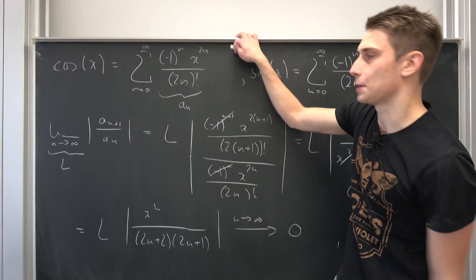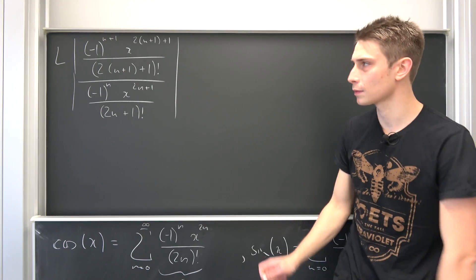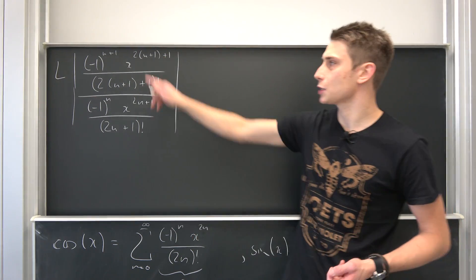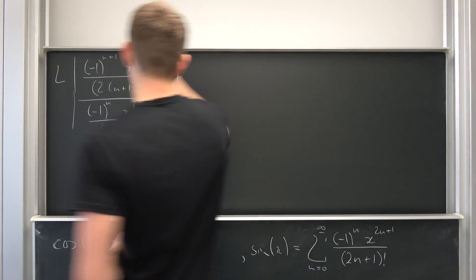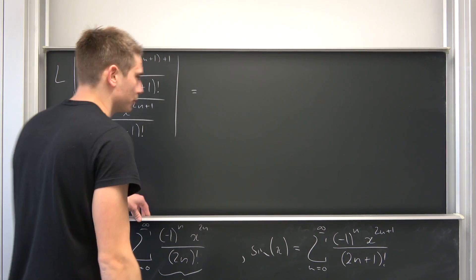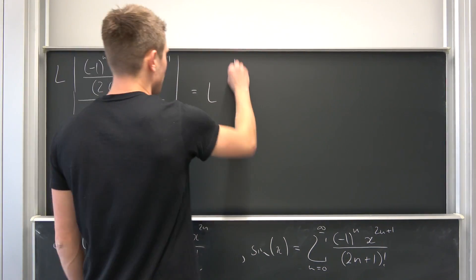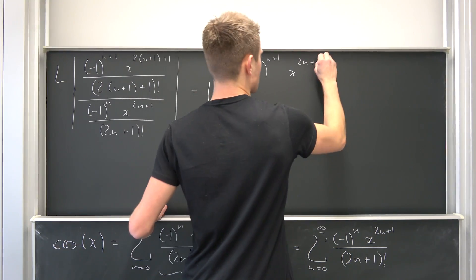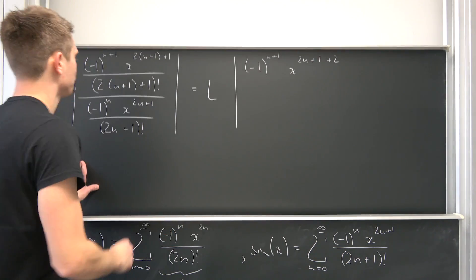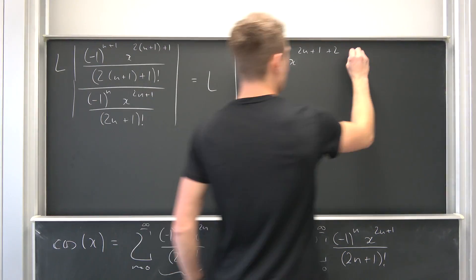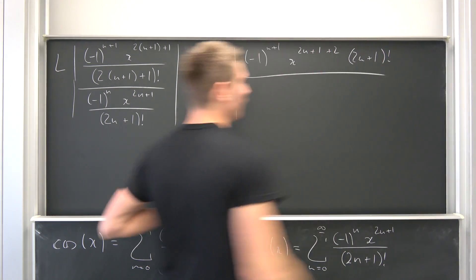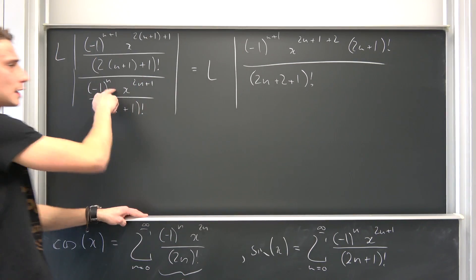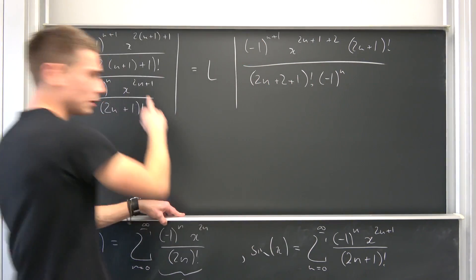Now we can do the same for sine. I've written everything out and you can see it's even more of a mess because of this n+1 up here. Once again, capital L denotes the limit as n approaches infinity. Up here we have negative one to the (n+1) power, x to the (2n+1+2) power, times (2n+1) factorial, over (2n+2+1) factorial times negative one to the nth power, times x to the (2n+1) power.